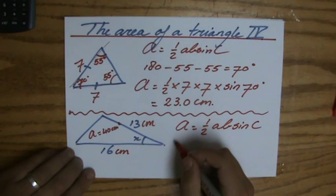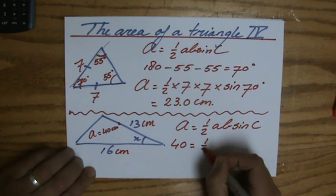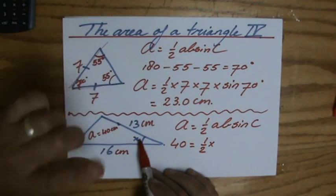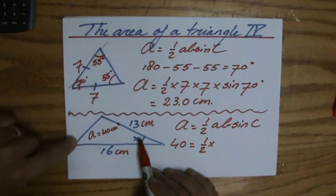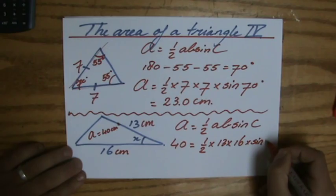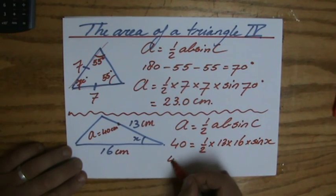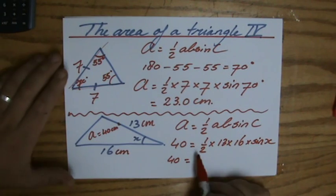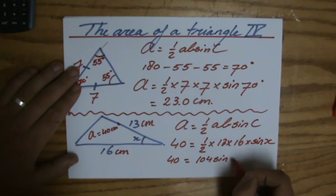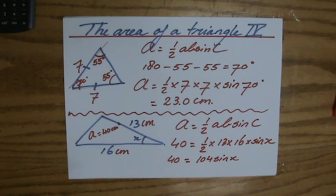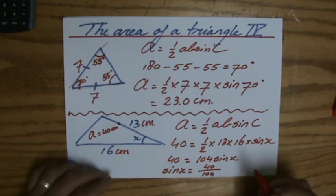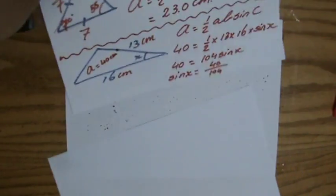If the area is 40, let's write down: 40 equals one-half times AB sine C. They cannot be teammates — this angle and those two lengths are not teammates, that's good. Because X's teammate is on the other side, and we don't care about that one. So: 40 equals one-half times 13 times 16 times the sine of X. Now, one-half times 13 times 16 is 104, so 40 equals 104 times the sine of X.